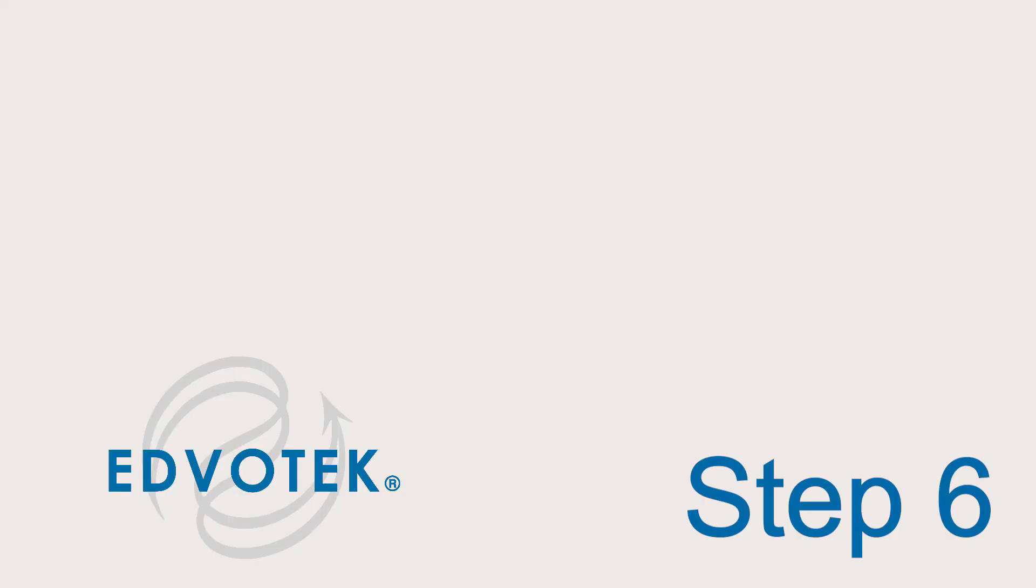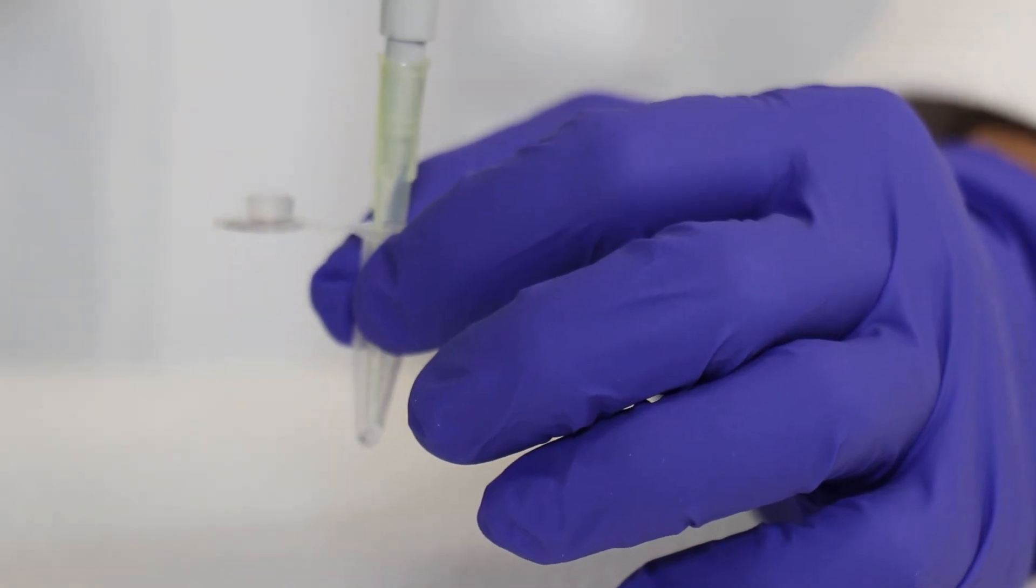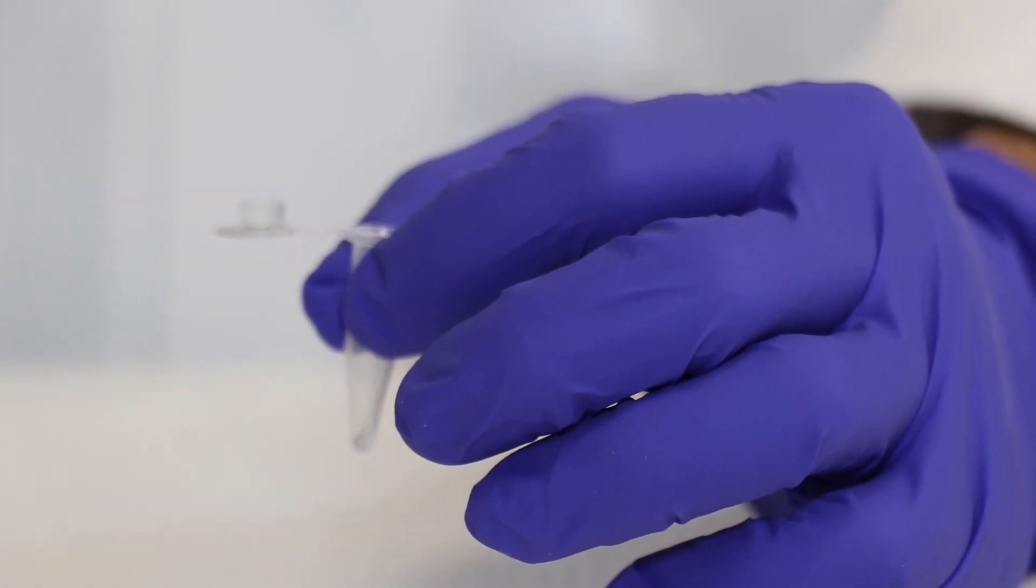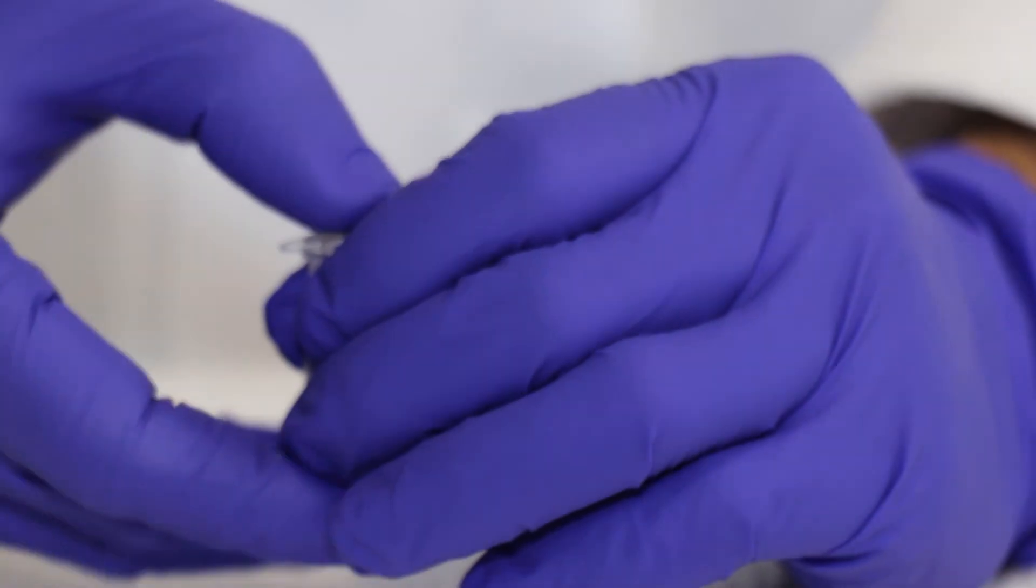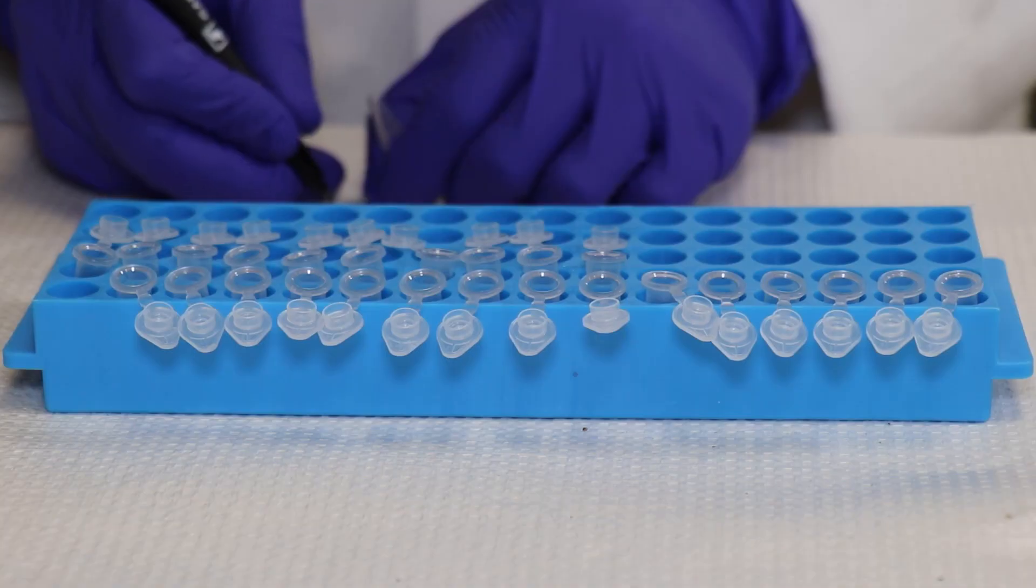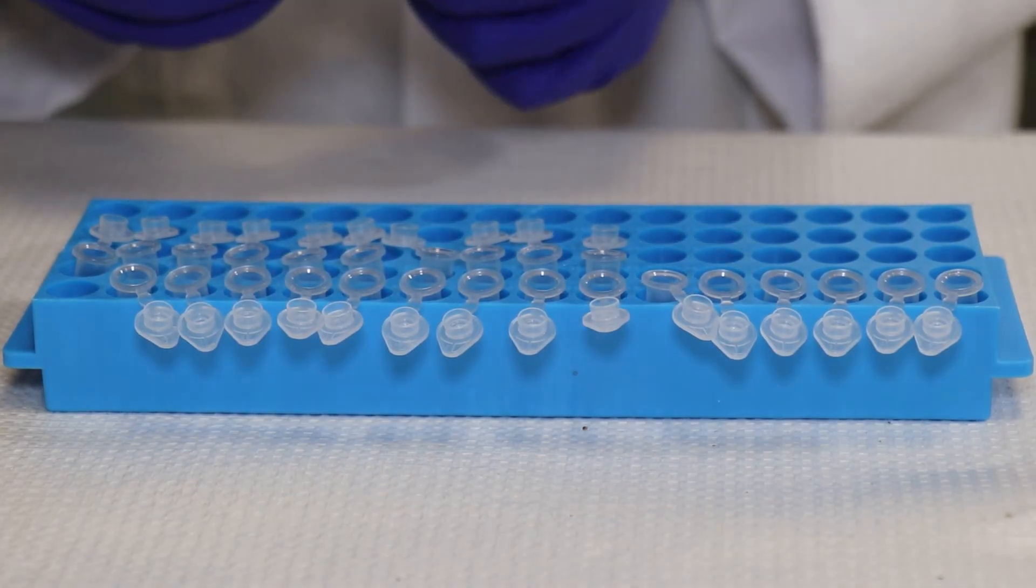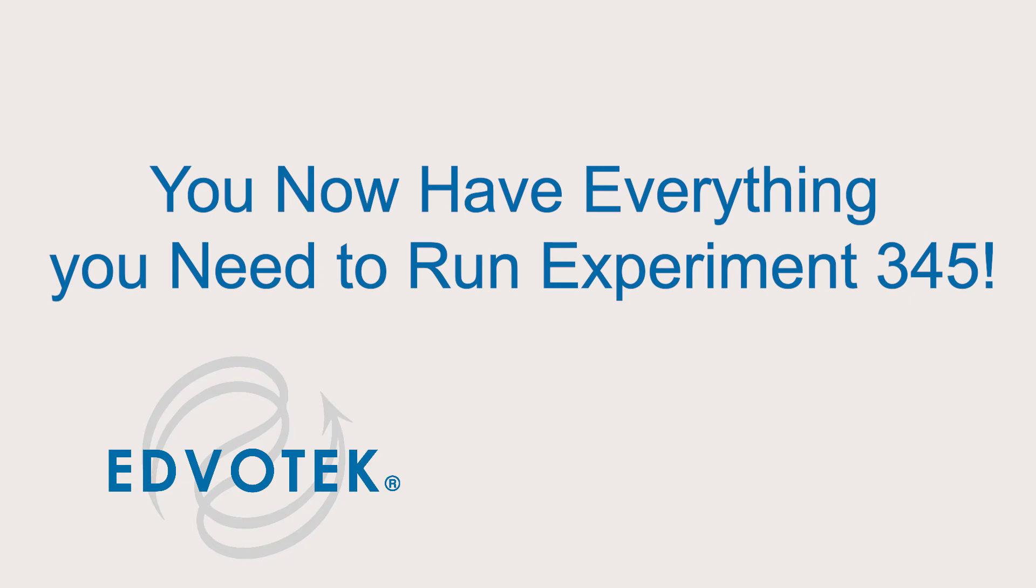Step 6: dispense 6 microliters of the H3 restriction enzyme into 25 tubes. Label these tubes H3. You now have everything you need to begin experiment 345: exploring the genetics of taste, SNP analysis of the PTC gene using PCR.